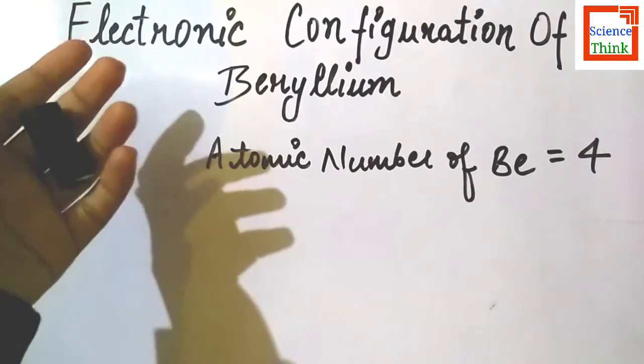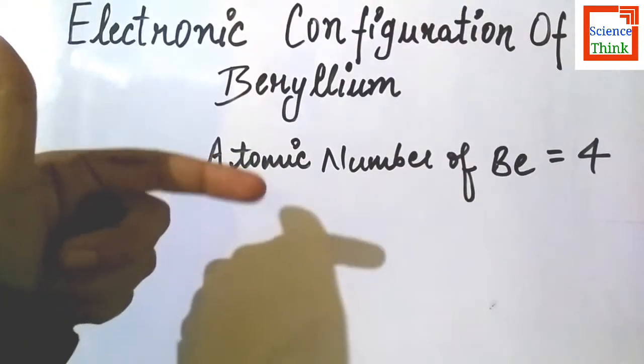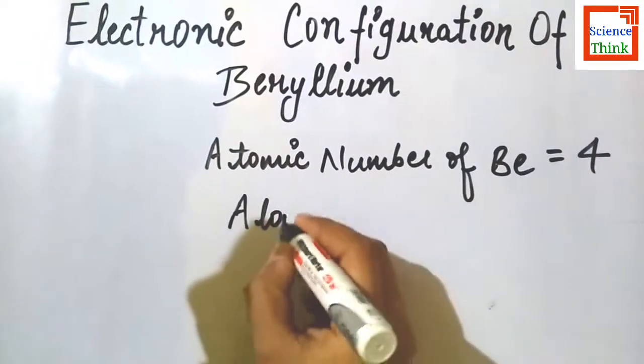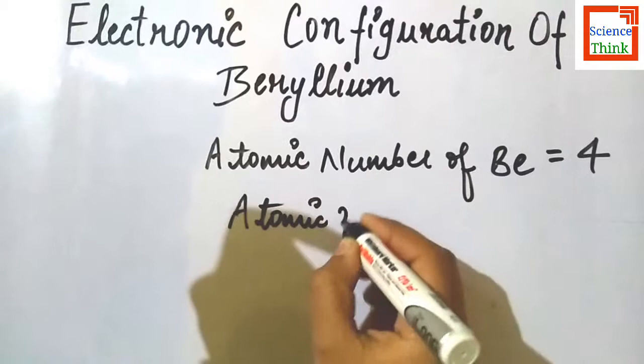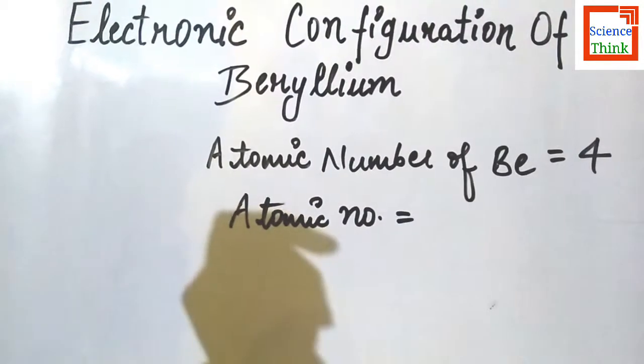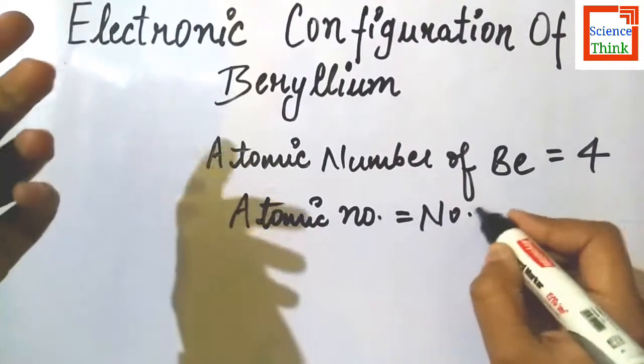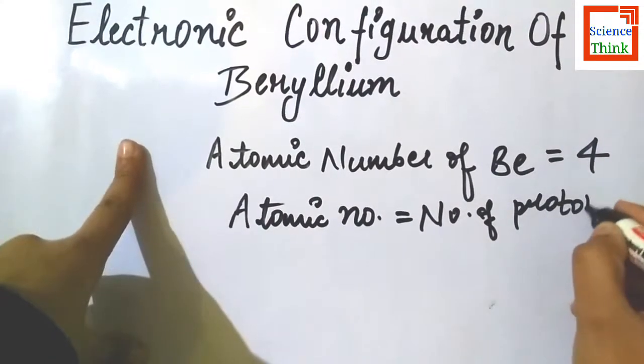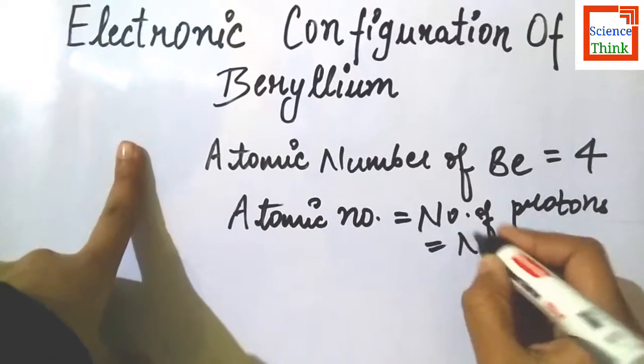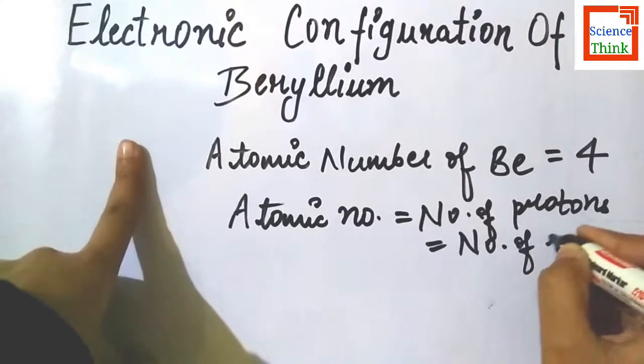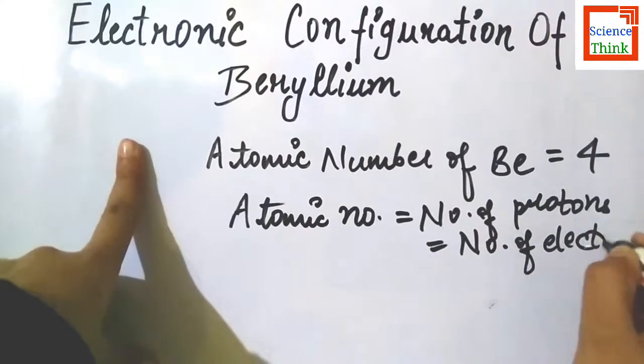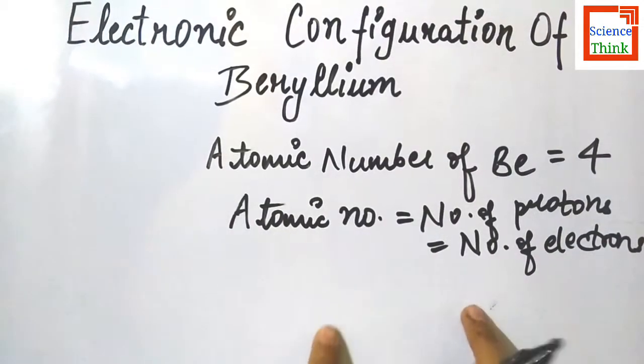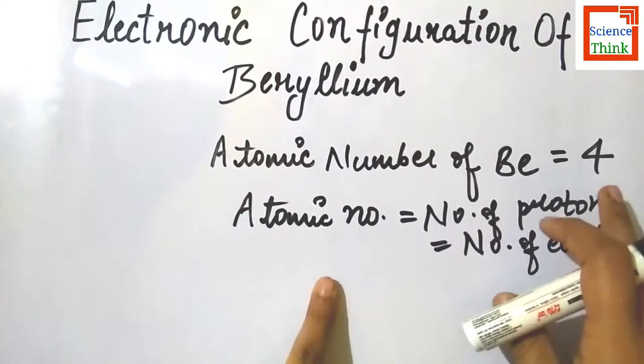And we know the atomic number is equal to the number of protons, which is equal to the number of electrons. So we know the atomic number of beryllium is 4, that means it has 4 protons and 4 electrons.